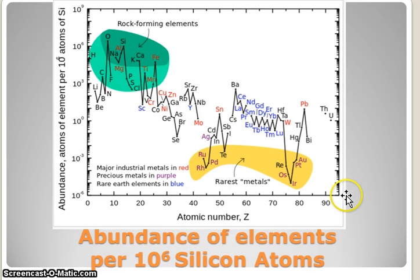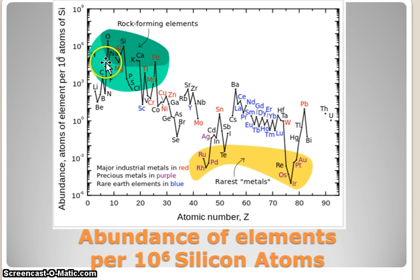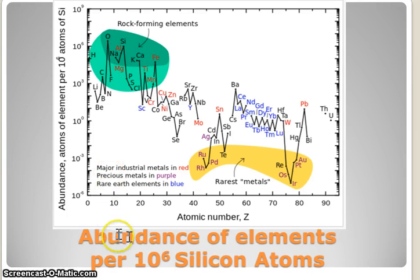The rare earths are down here in the yellow, for example, and the more common rock-forming elements are up here: oxygen, silicon, iron, calcium, potassium, and others.